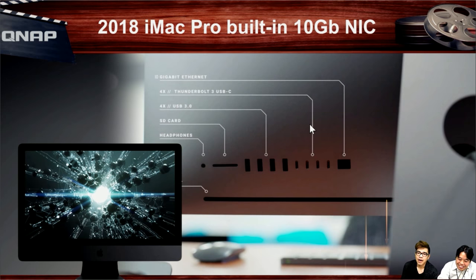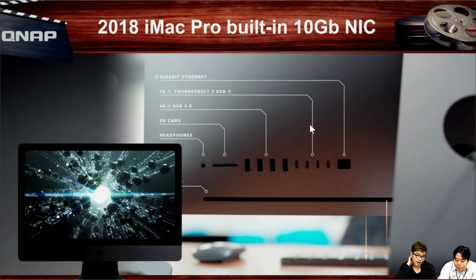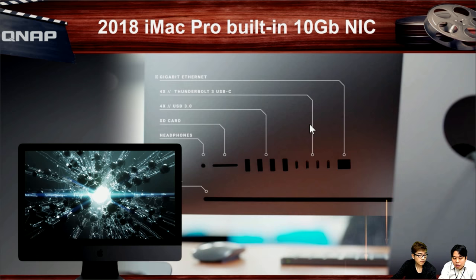Here's the back panel of the iMac Pro. It features a 10G Ethernet port with RJ45 on the right side, and next to it are four Thunderbolt 3 USB Type-C ports. You only need one to connect to the NAS, leaving three available for other uses. Alternatively, multiple iMac Pros in your environment can each connect via Thunderbolt 3 directly to the NAS, or you can use the 10G Ethernet port directly.